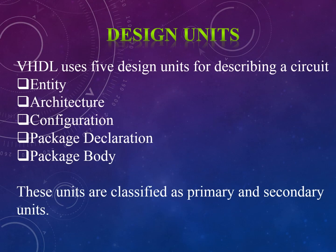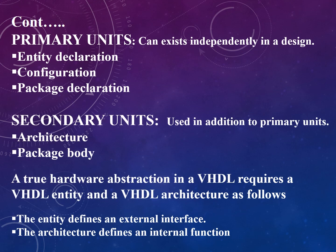VHDL uses five design units for describing a particular circuit: entity, architecture, configuration, package declaration, and package body. These five units are classified as primary units and secondary units. Primary units can exist independently in a design — entity declaration, configuration, and package declaration come under primary units. Secondary units are used in addition to primary units — architecture and package body come under secondary units. True hardware abstraction in VHDL requires a VHDL entity and a VHDL architecture, where the entity defines an external interface and the architecture defines an internal function.